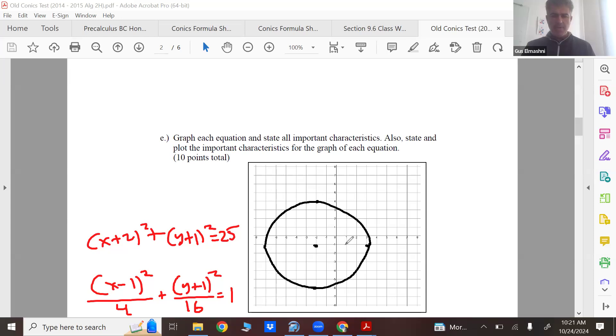Okay and where's the center of the ellipse? One, negative one. And you have to go left two, right two, up four. How many times do you think these guys touch? Yeah three times. So the important characteristics I mean I think it's pretty obvious.